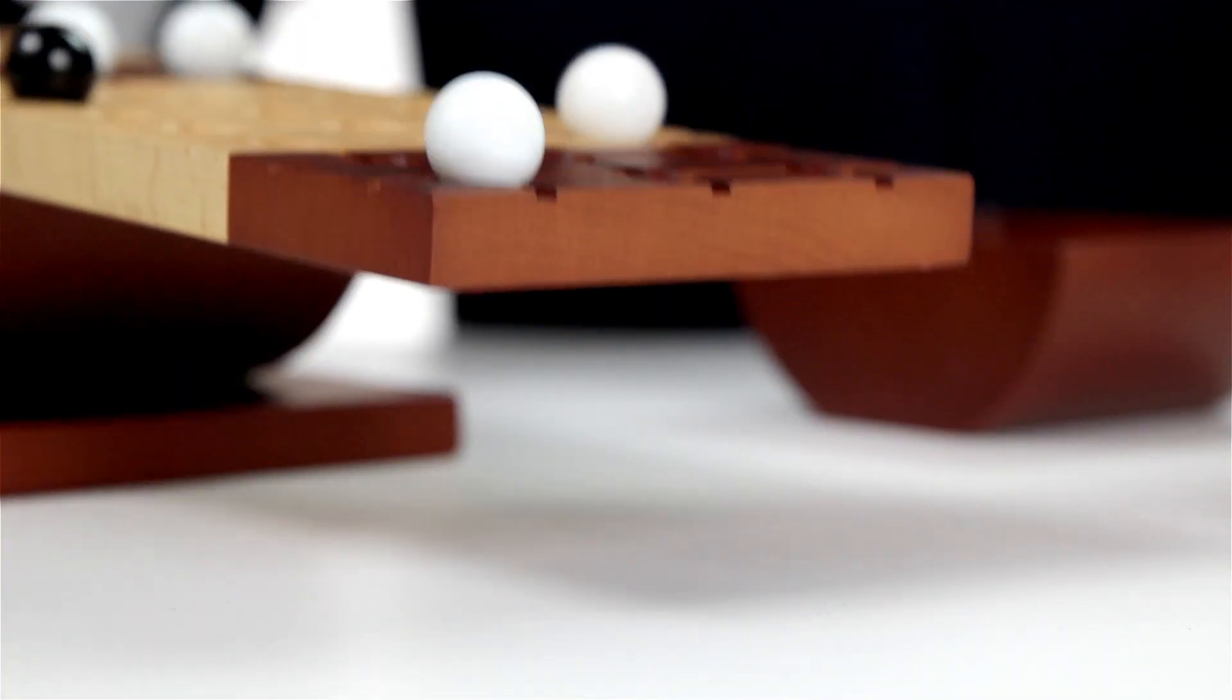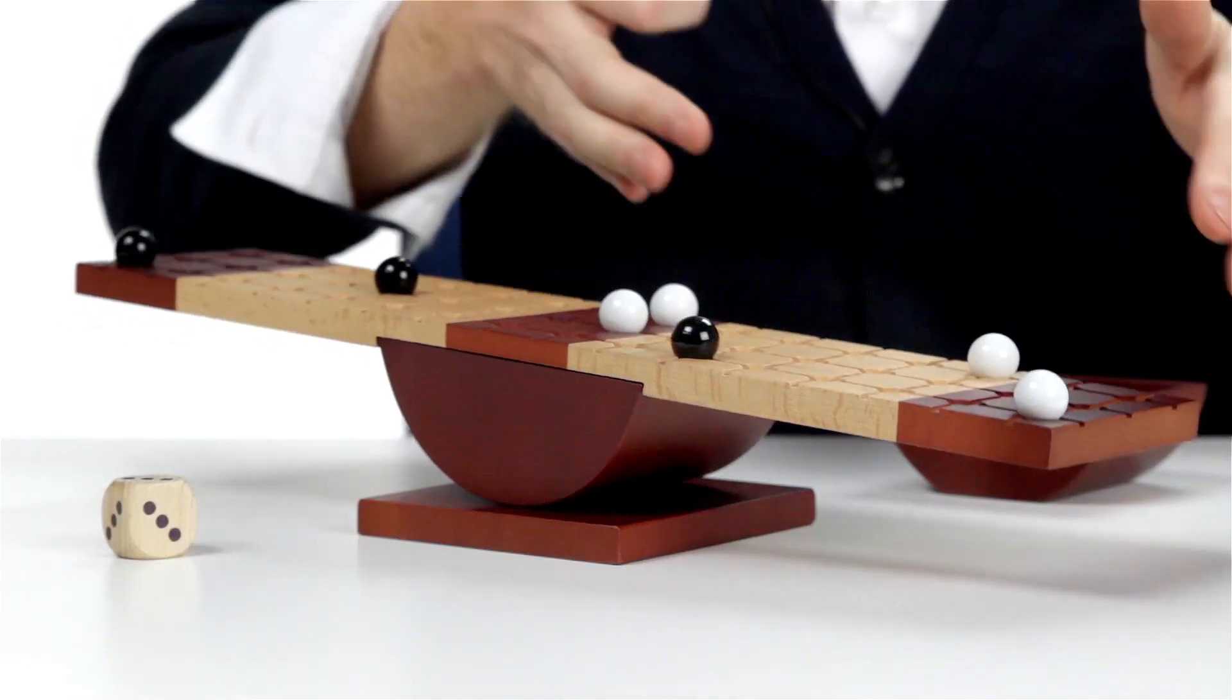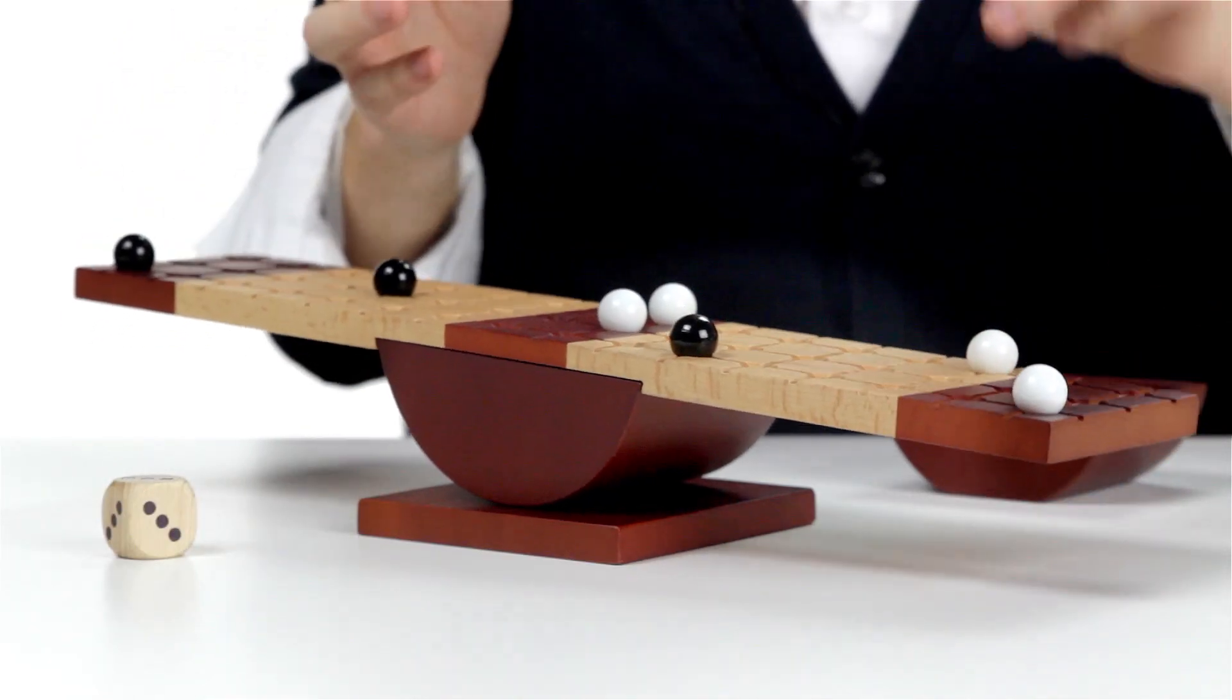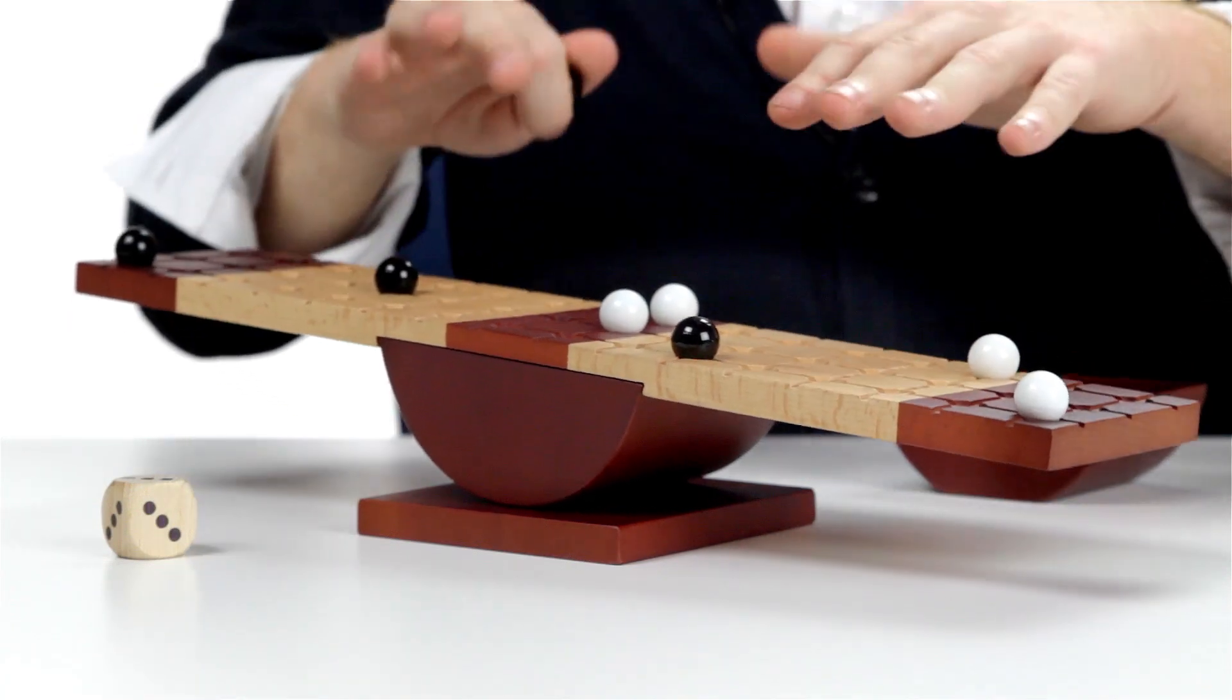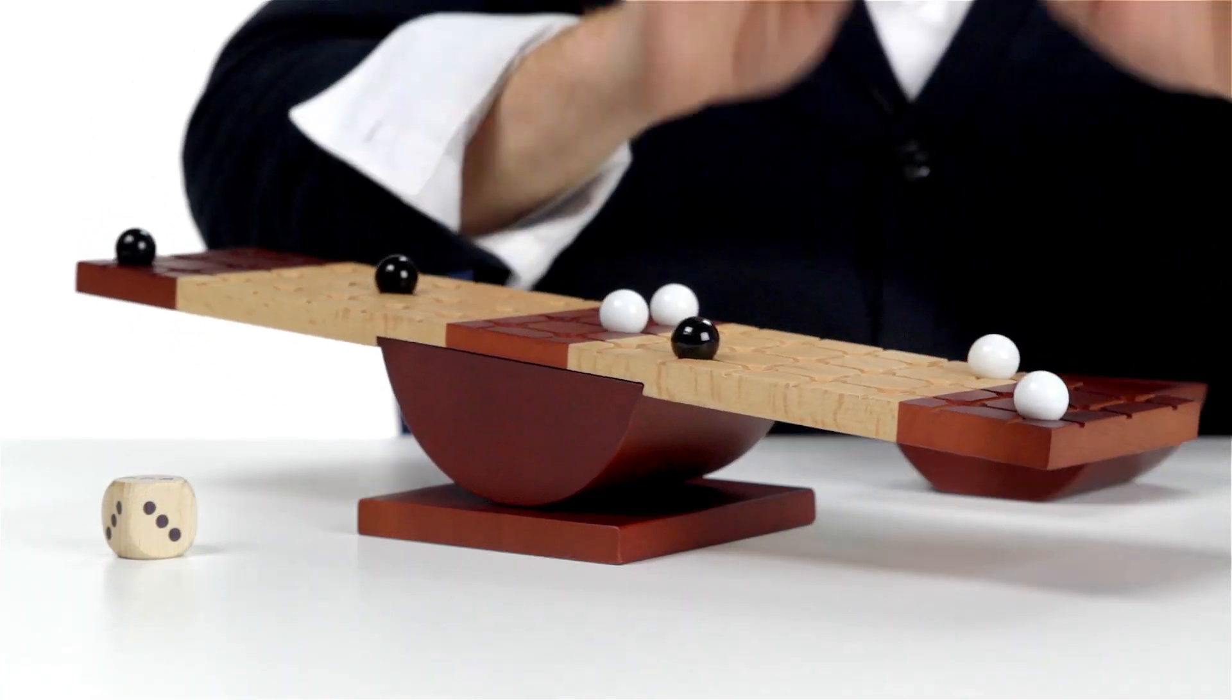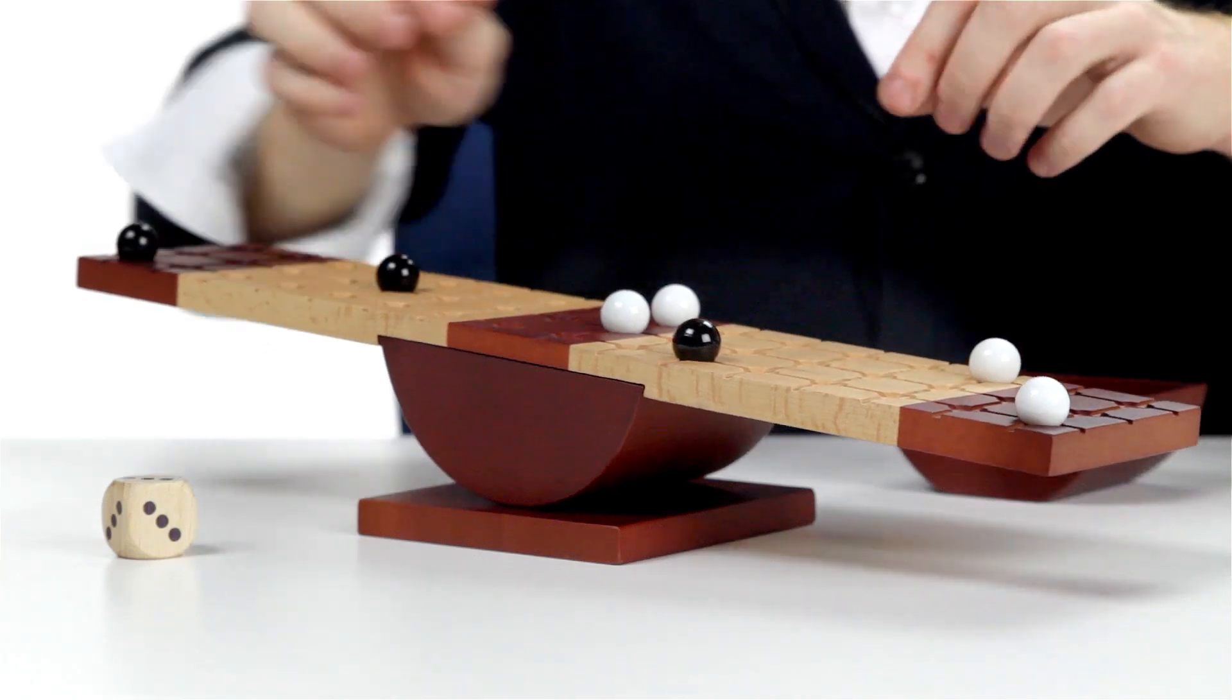If the board touches the table, even for a nanosecond, then the other player wins the game. So really there are two ways to win. Either trick your opponent into making their board rock and land on the table, or get four of your marbles into your end zone.